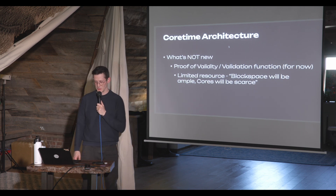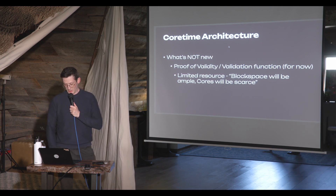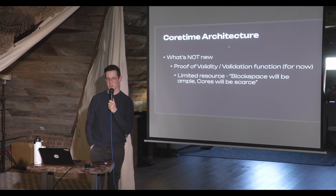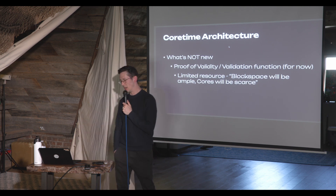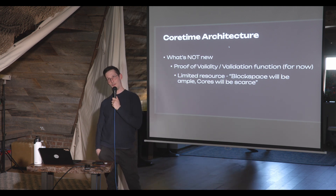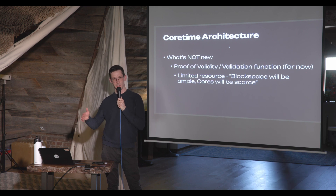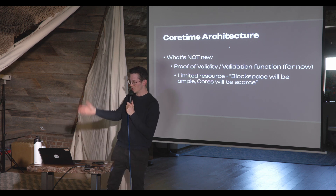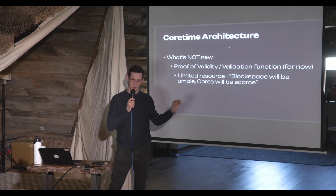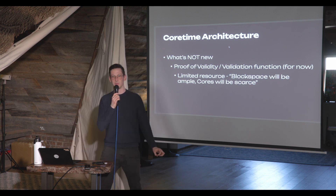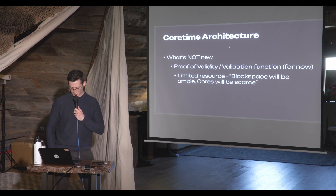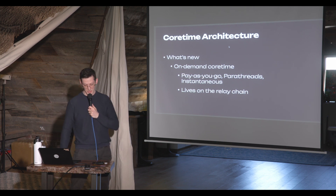For each core you get tons of block space — one megabyte per second, to be precise. Comparing this to EIP-4844 blob space on Ethereum, which provides blobs specifically for rollups for data availability: EIP-4844 is the first iteration and what took about three years to develop will provide about 0.00625 megabytes per second, compared to the 60 megabytes per second we see right now in Polkadot.